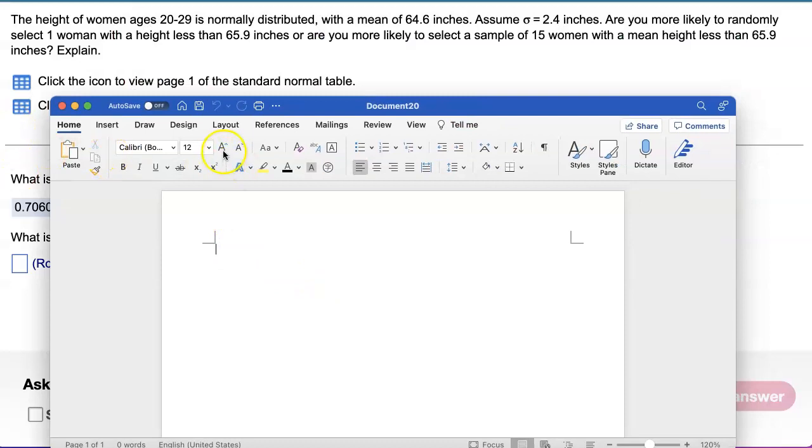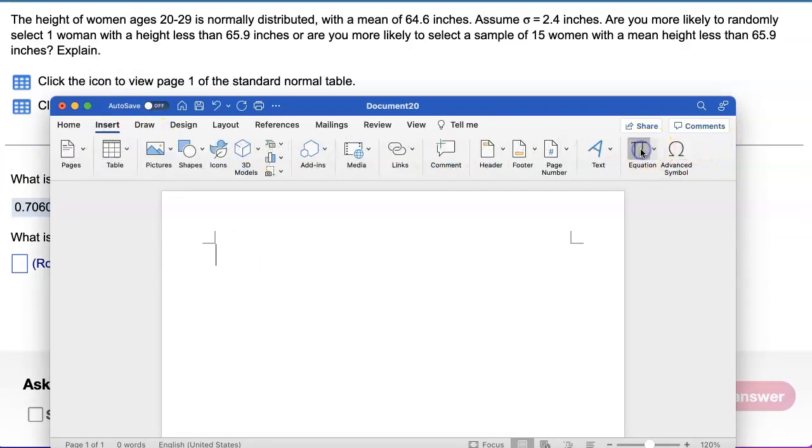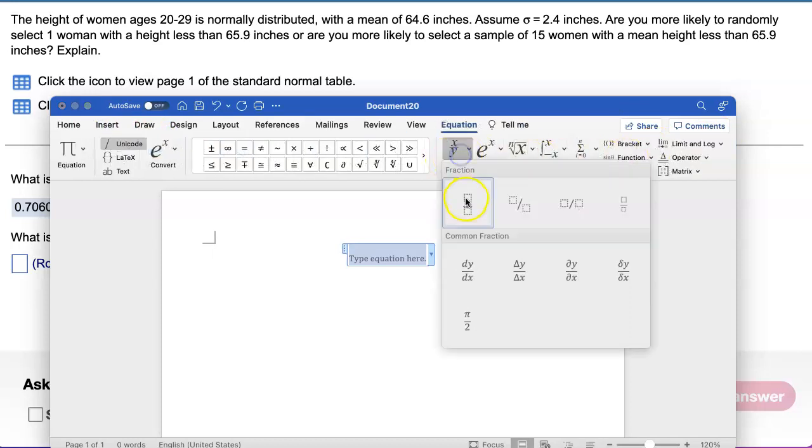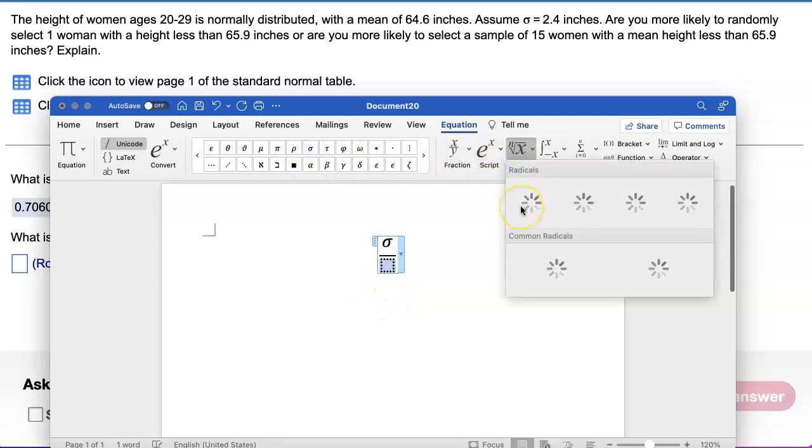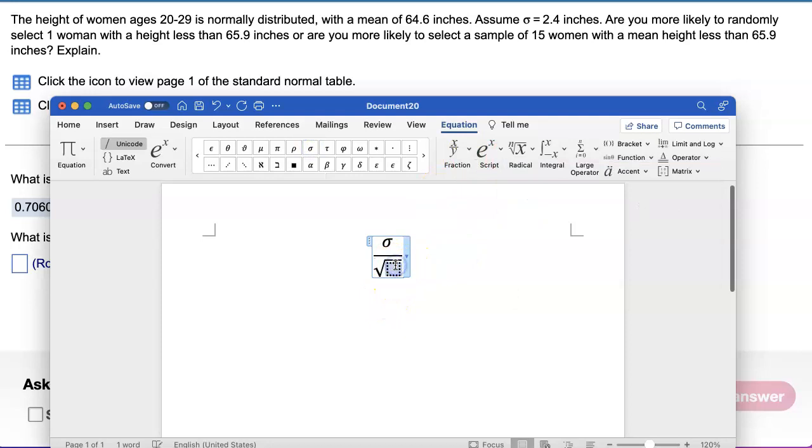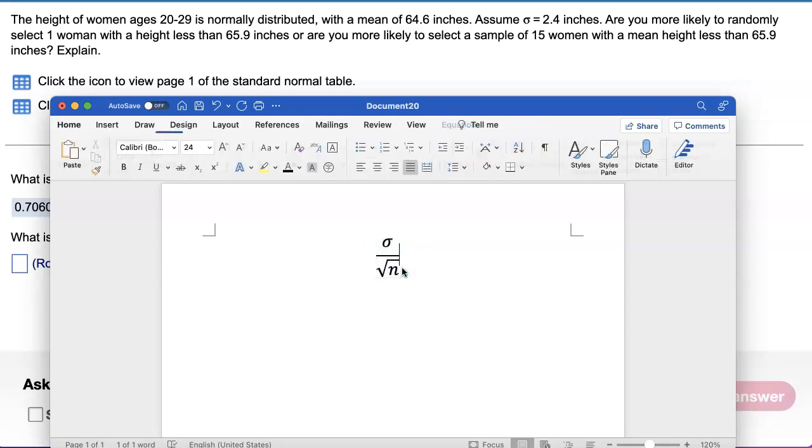That formula looks like this. You have to have population standard deviation divided by square root of sample size n. So that is going to be the standard deviation we have to use for this case. So let's find what that number is.